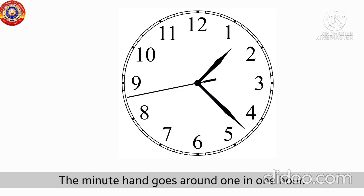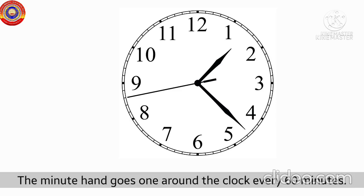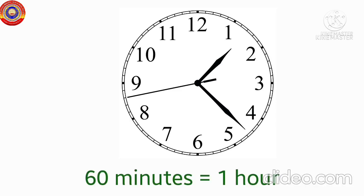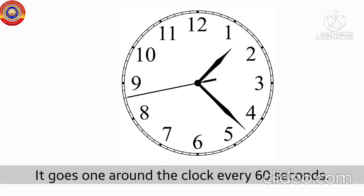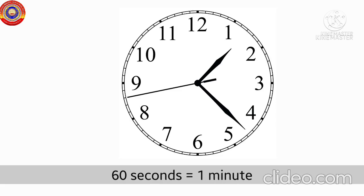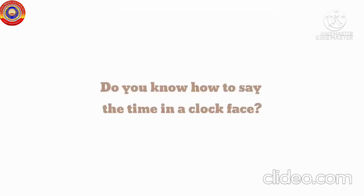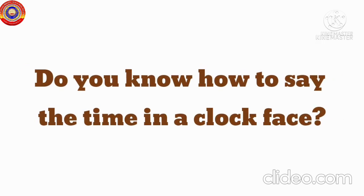The minute hand goes around once in one hour — it goes around every 60 minutes. So we can say that 60 minutes is equal to one hour. The thin long hand is called the second hand. It goes around the clock every 60 seconds, that is, 60 seconds is equal to one minute.